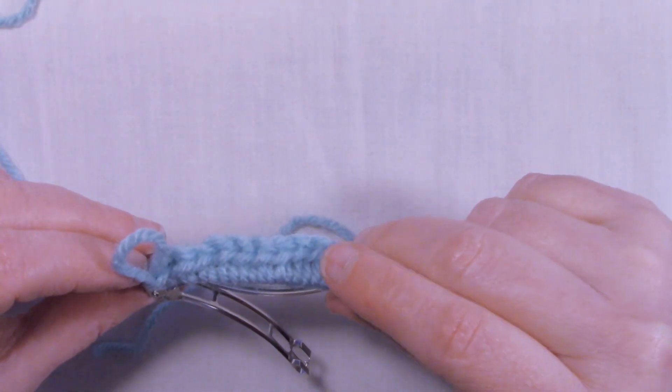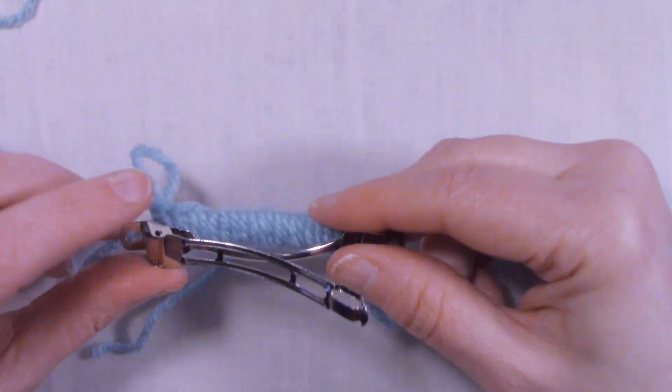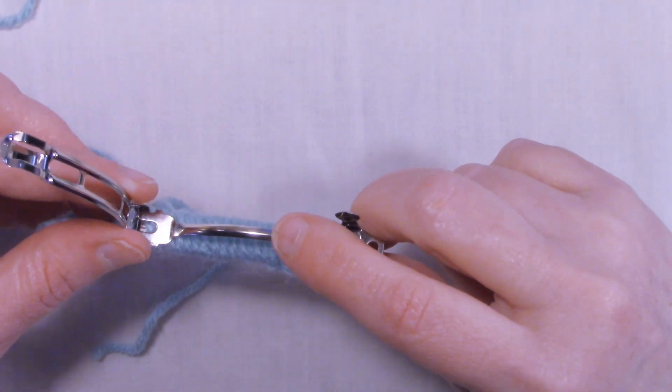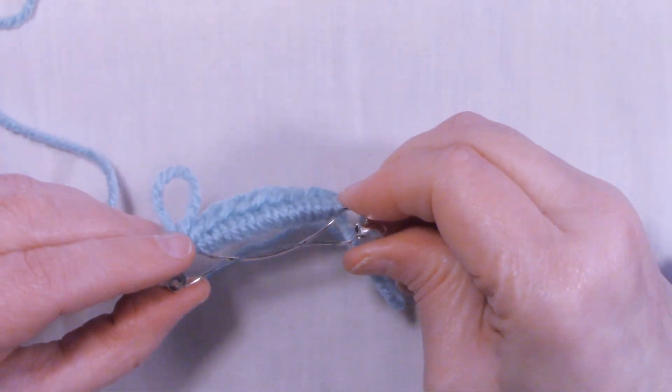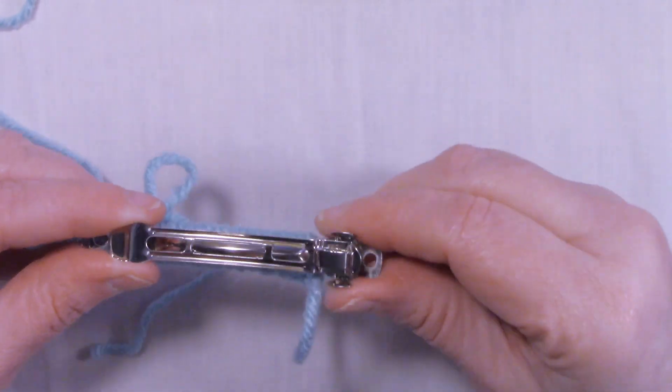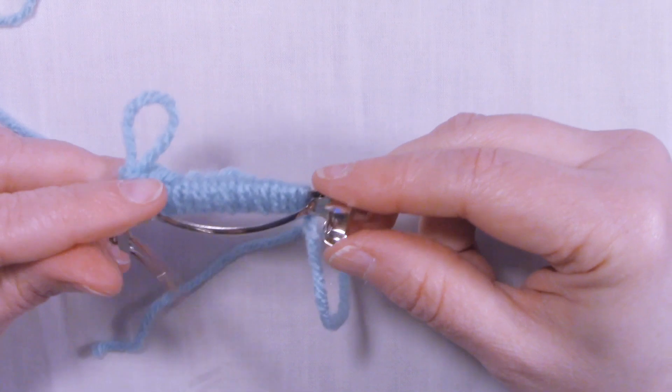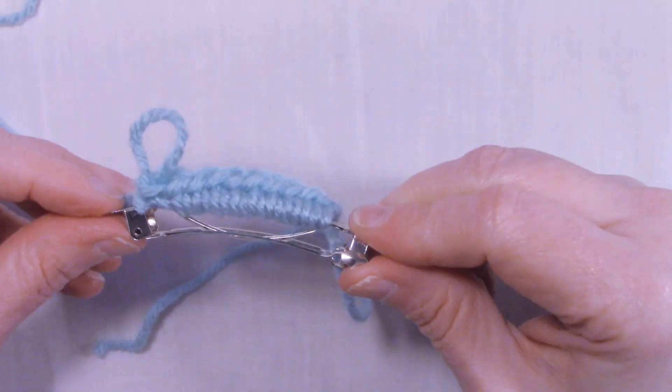Once you have all of your single crochets onto your barrette, replace the metal bar, and make sure your barrette can open and close properly.